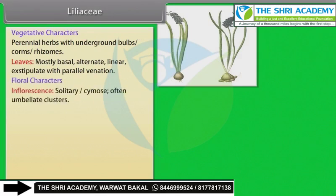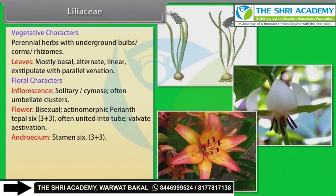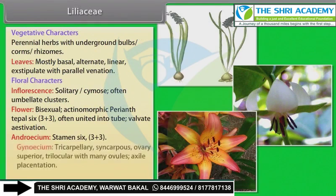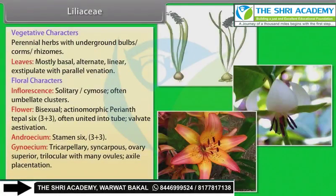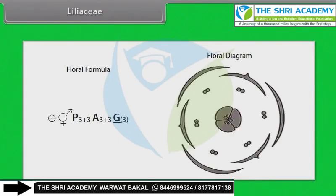Floral characters: inflorescence solitary, cymose, often umbellate clusters; flower bisexual, actinomorphic; perianth — tepals 6 (3+3), often united into two whorls, valvate aestivation; androecium — stamens 6 (3+3); gynoecium — tricarpellary, syncarpous, ovary superior, trilocular with many ovules, axile placentation. Fruit: capsule, rarely berry. Seeds: endospermous.